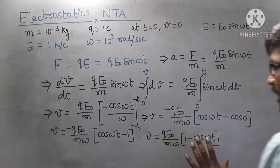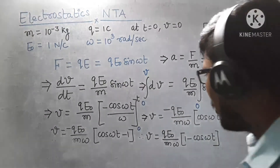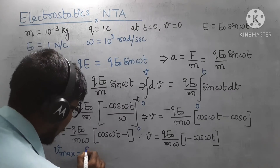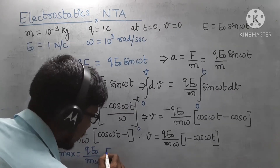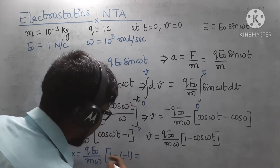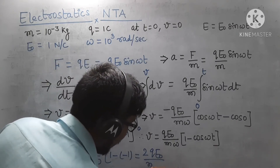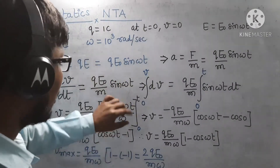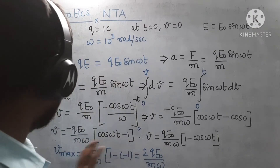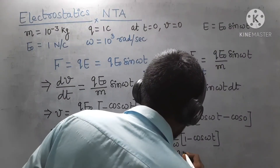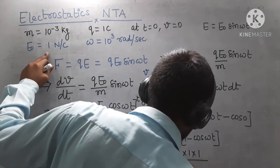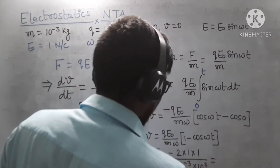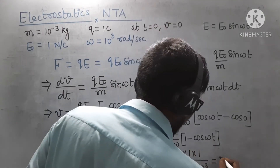Now if I want the maximum value of velocity, I need the minimum value of cos(ωt), which is −1. So v_max = (QE₀/mω)(1 − (−1)) = 2QE₀/mω. Substituting the values: Q = 1 C, E₀ = 1, m = 10⁻³ kg, ω = 10³, so 10⁺³ × 10⁻³ = 10⁰ = 1. Therefore, v_max = 2 × 1 = 2 m/s. This is the maximum speed the charged particle can attain.